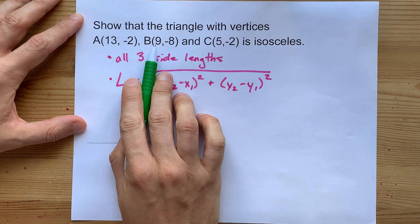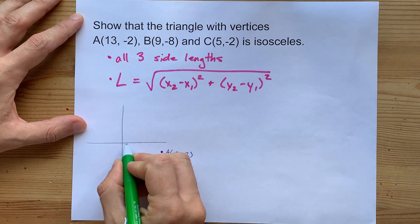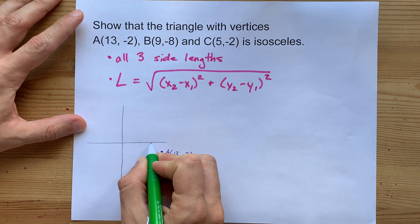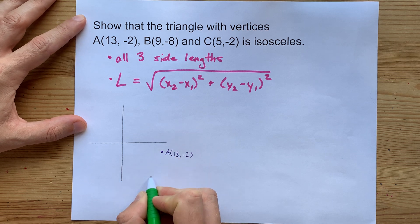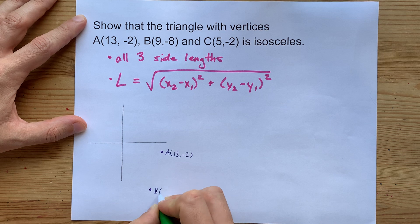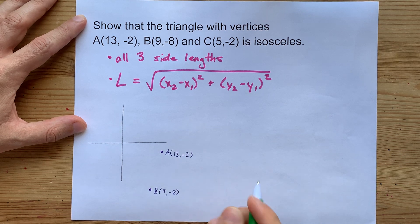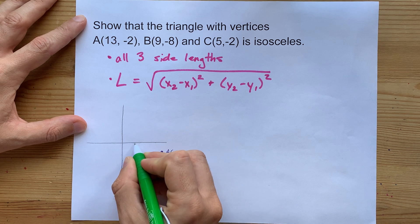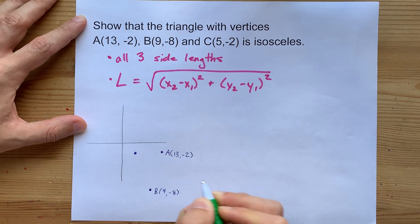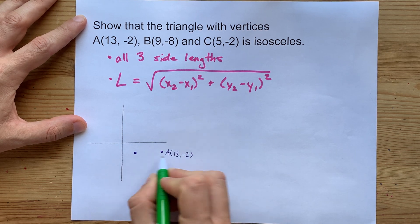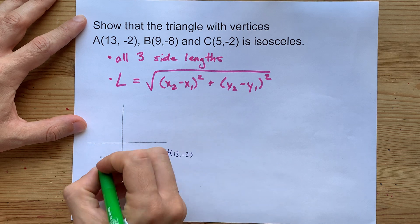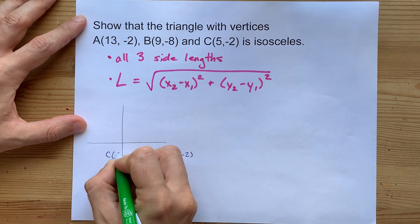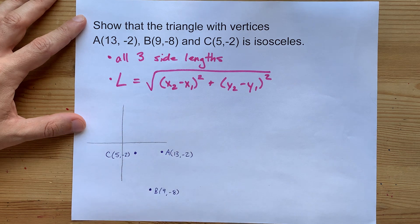Point B is at (9, -8). So that's 9 on the positive x and then negative 8 is way down here somewhere. Lastly, C is at (5, -2). 5 is going to be around here, comma negative 2. Oh, those both have the same y value. Well, that's going to be useful.